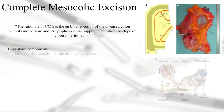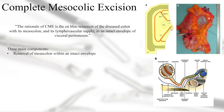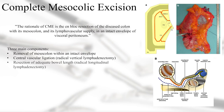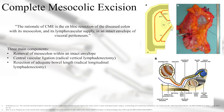The three main components of the technique are: a meticulous mobilization of the mesocolon away from the retroperitoneum without breaching the fascial layer; a central vascular ligation together with a central lymphadenectomy along the anterior border of the superior mesenteric vein; and finally, the resection of adequate bowel length in order to perform a correct longitudinal lymphadenectomy.